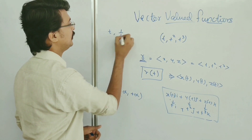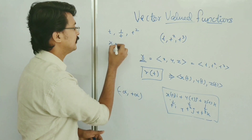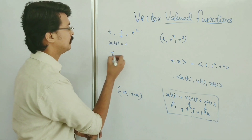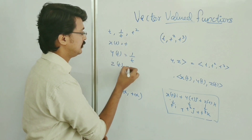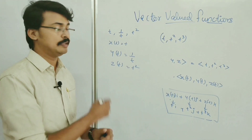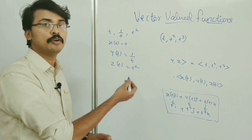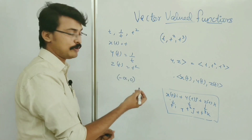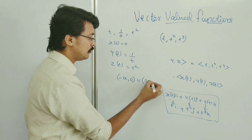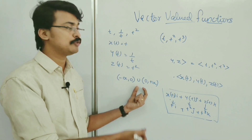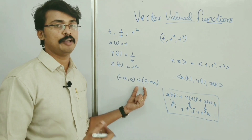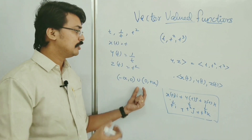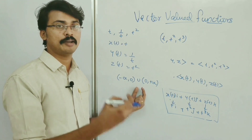For example, let r(t) = t·i + (1/t)·j + t²·k, so x(t) = t, y(t) = 1/t, and z(t) = t². Here, when t = 0, y(t) is not defined, so the domain excludes 0. The natural domain is (−∞, 0) ∪ (0, +∞). When we don't mention a specific domain, we use the natural domain.